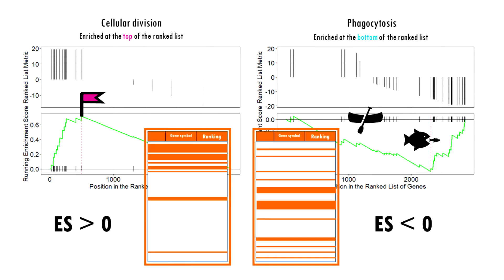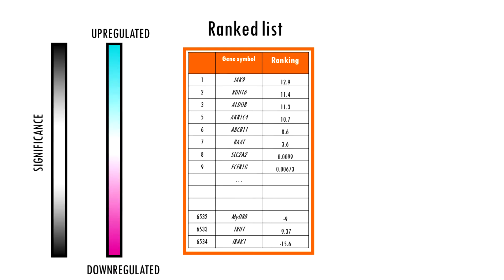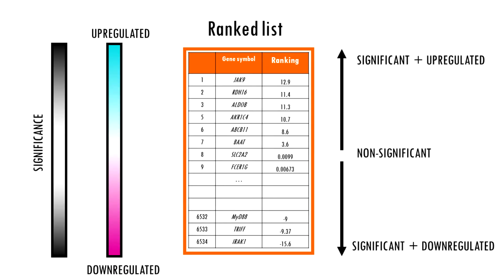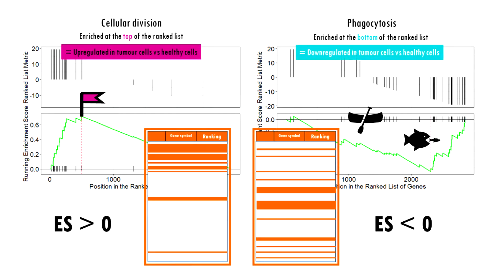It very much depends on what your ranked list actually shows, but for example you could place upregulated significant genes at the top and downregulated significant genes at the bottom. This way the enrichment score you obtain for each pathway will tell you if that pathway is upregulated in, for example, your tumor cells or downregulated in tumor cells.